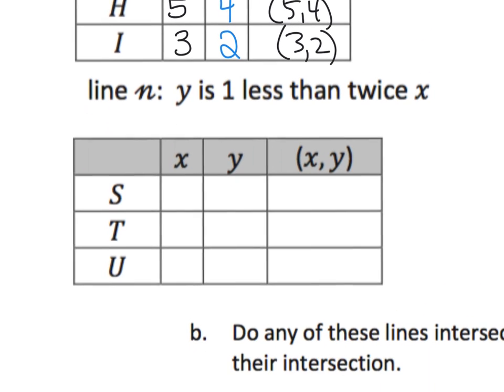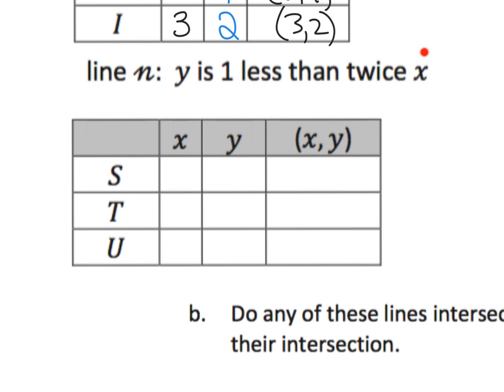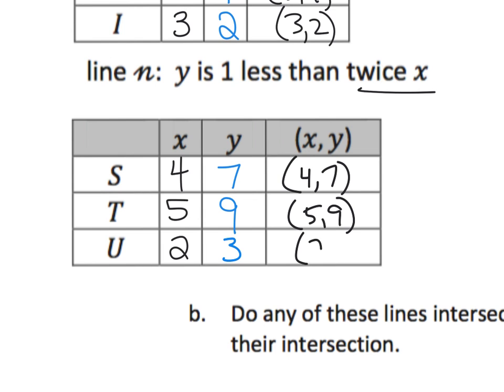And one more rule. Y is 1 less than twice x. That means we're going to take our x, double it, and then subtract 1, and that gives us our y. Let's choose some small numbers because we're going to have to double it. Let's choose 4, 5, and 2. Y is 1 less than x doubled. X times 2 is 8, 1 less than that is 7. 5 times 2 is 10, 1 less than that is 9. 2 doubled is 4, and 1 less than that is 3. So our ordered pairs are 4, 7, 5, 9, and 2, 3.